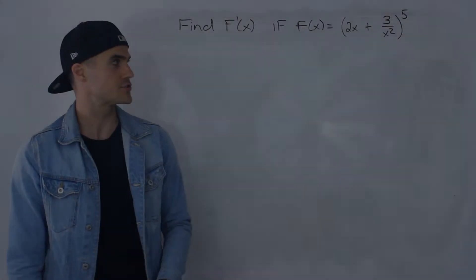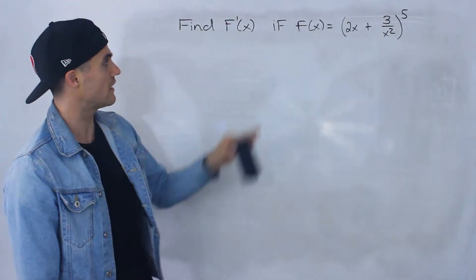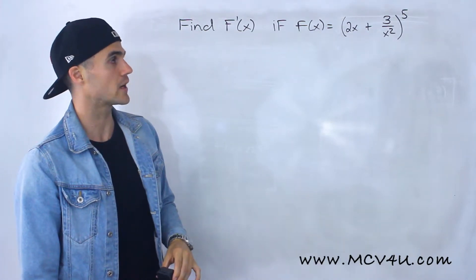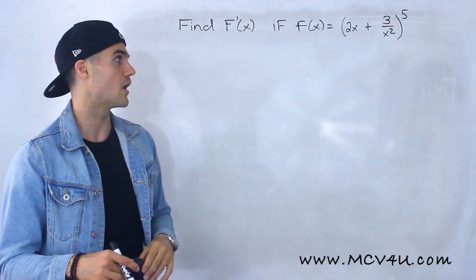Welcome back, everyone. Patrick here. Moving on to another chain rule example. We've got to find the derivative if f of x is 2x plus 3 over x squared, all to the power of 5.